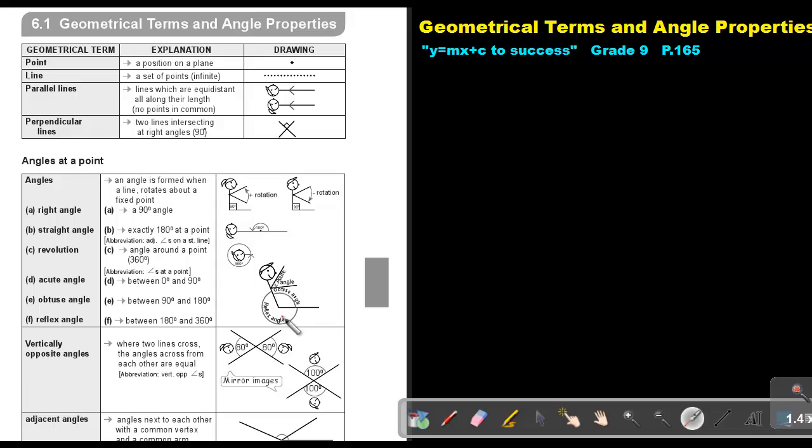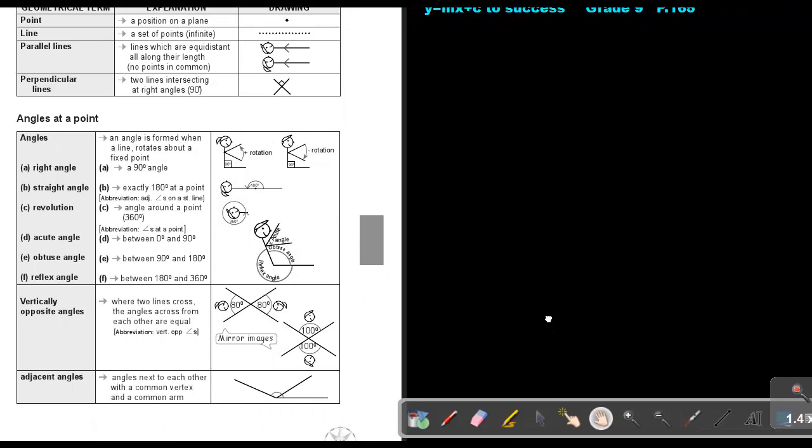What's a reflex angle? A reflex angle is an angle between 180 and 360. So this angle will be a reflex angle. Vertical opposite angles: this is vertical opposite. Where two lines cross, the angle across from each other are equal. So this is vertical opposite angles.